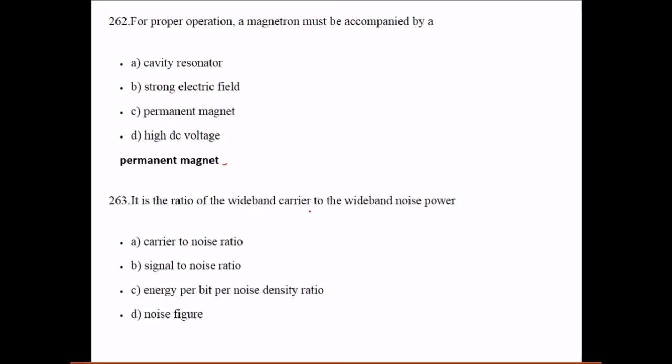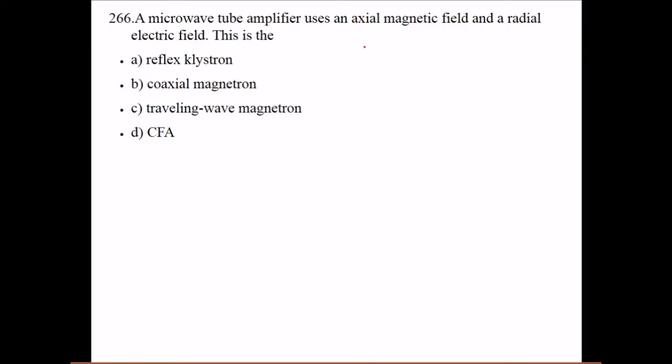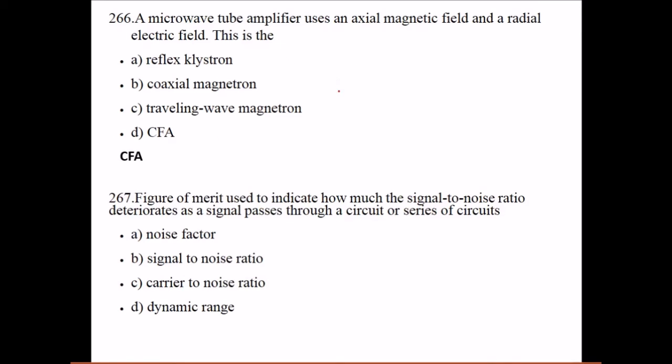It is the ratio of wideband carrier to the wideband noise power - carrier to noise ratio. The microwave tube amplifier uses an axial magnetic field and a radial electric field - this is the CFA.